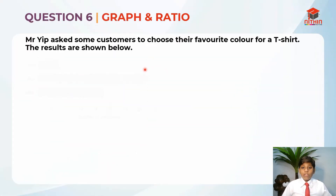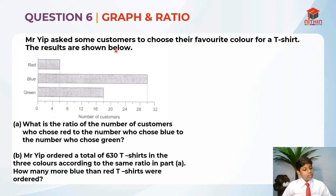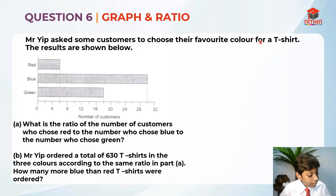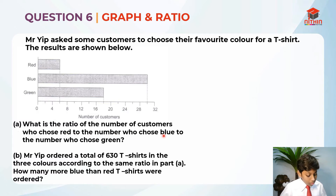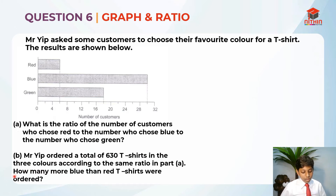Question 6 is on graph and ratio. Let's read the question first. Mr. Yip asked some customers to choose their favourite colour for a t-shirt. The results are shown below in the form of a graph. Part A: what is the ratio of the number of customers who chose red to the number who chose blue to the number who chose green? Part B: Mr. Yip ordered a total of 630 t-shirts in the 3 colours according to the same ratio in part A. How many more blue than red t-shirts were ordered?